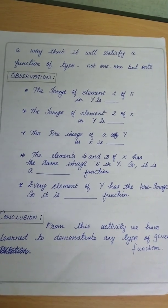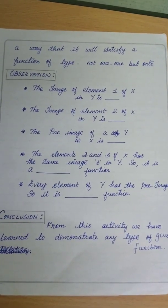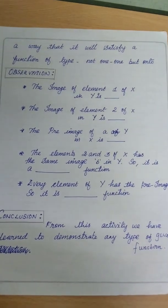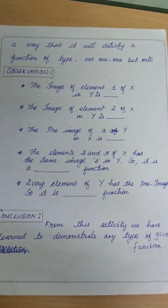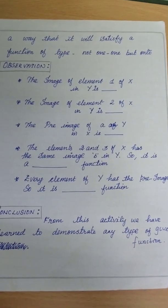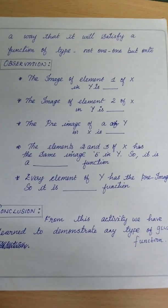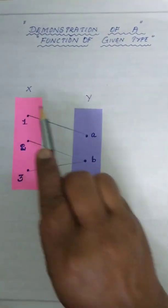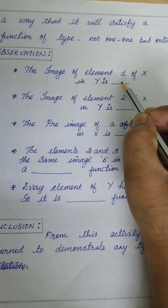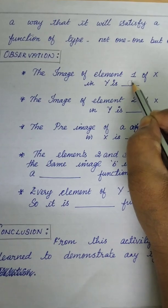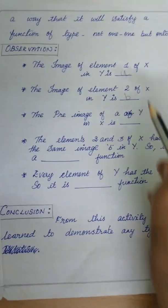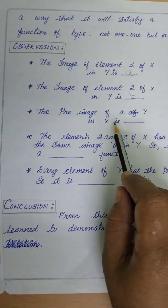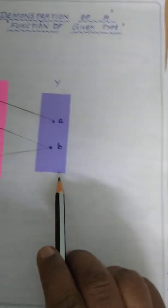Observation — what we observe from this activity. The image of element 1 of X in Y: we can see 1 is connected with a, so the image of 1 is a. Then the image of element 2 — 2 is b, we have noticed it is b. The pre-image of a of Y in X: the pre-image of a is 1, so here you can fill 1.